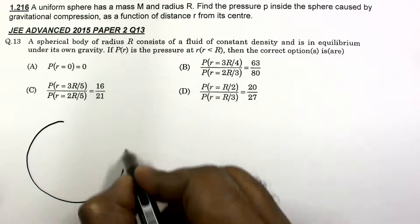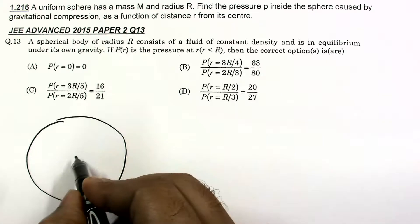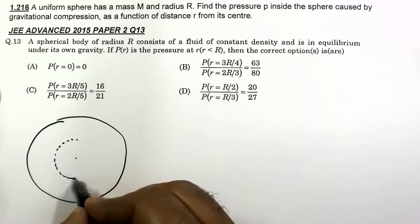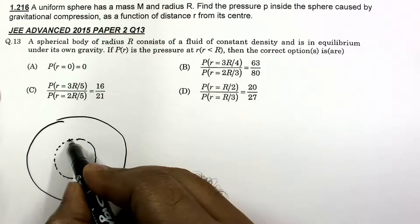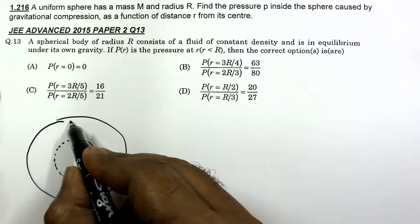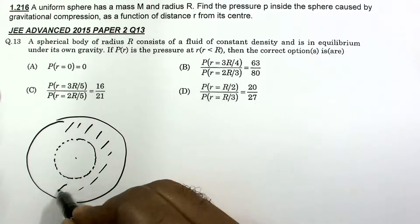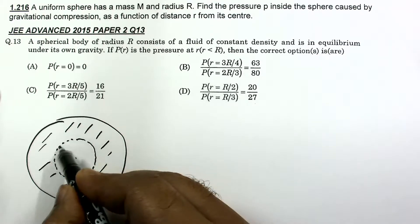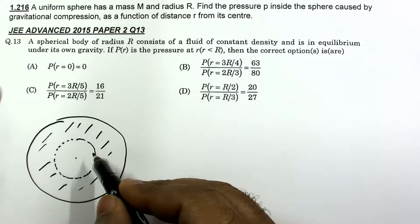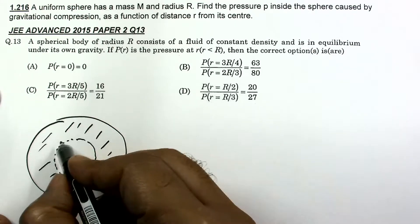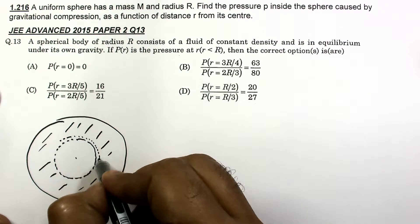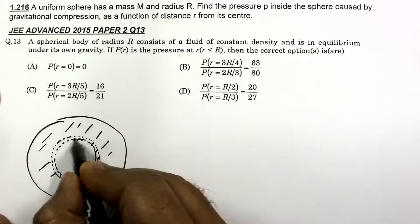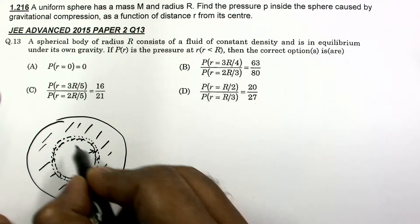This is the sphere of mass capital M. To see how the pressure arises, consider that on any layer, there is pressure due to the weight of the remaining part above it. For the calculation of pressure, let us create a layer of width dr — that is, a shell at radius r with thickness dr.